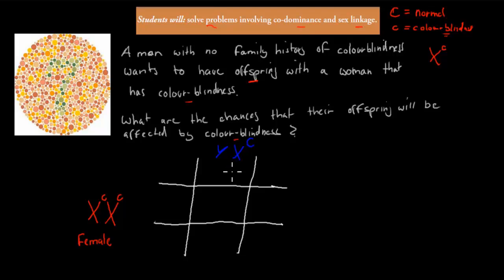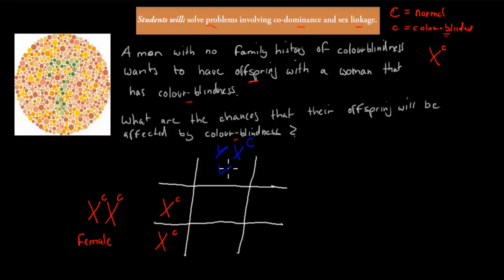Once we've established this, we do the normal Punnett square. We put the two X chromosomes from the female — both recessive for colour blindness — along the top, and then we put the two chromosomes from the male — the Y chromosome and the capital C X chromosome — along the side.